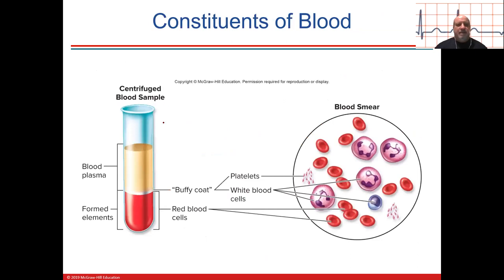In a blood sample that's been spun, you can see the formed elements. The red blood cells are the heaviest part and sink to the bottom. Check out the red blood cells — they look like biconcave discs with no nucleus. The red blood cells make up most of the formed elements.